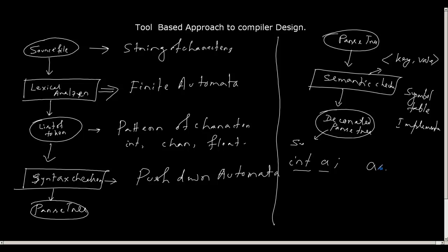The variable 'a' is the key, and its type 'int' is the value — int being the declaration. So I create a pair: whenever I search for 'a', I can say that 'a' is of type int. This is the construct for a map in C++. If you know C++, that would be better; if not, try to learn it fast, because we are going to implement all these compiler design structures through C++ only.